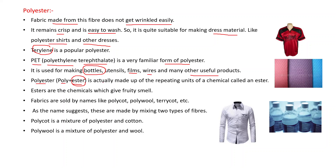Polyester means 'poly' plus 'ester'. Ester is a class of organic compound; when many ester molecules are joined, they convert into polyester. Polyester is made up of repeating units of a chemical called ester. Esters are the chemicals which give fruity smell — whatever smell we get from fruits is due to chemical esters.